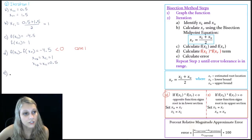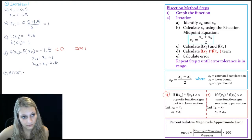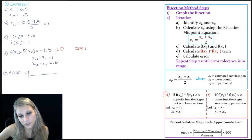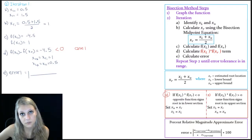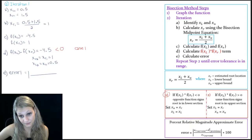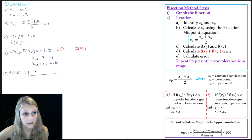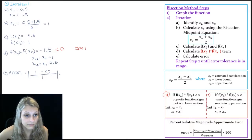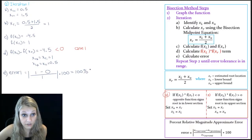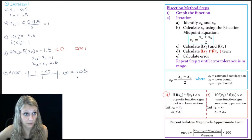The last step in our iteration is to determine if we need to perform another iteration by looking at the error. I'm using percent relative magnitude approximate error because I don't know the actual root location, so I'm comparing my current estimate to my previous estimate. Our current estimate is 1 and our previous estimate is 0 since we don't have a previous iteration. This gives us 100% error, which makes sense because this is our first iteration, so we need to perform a second iteration.